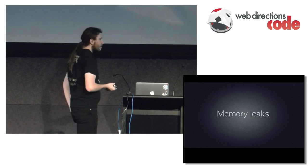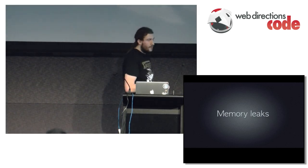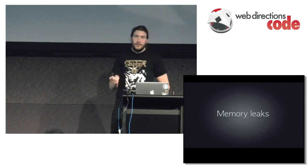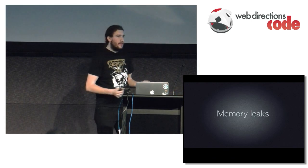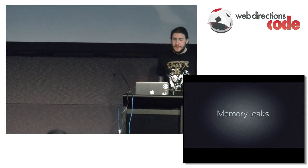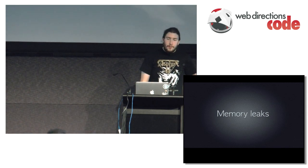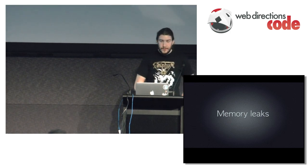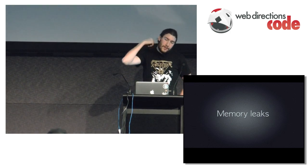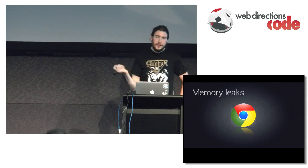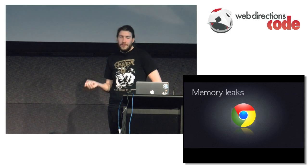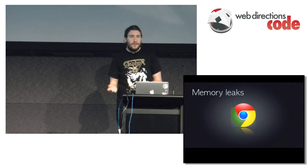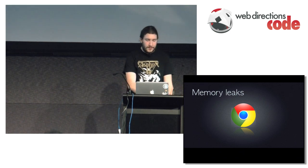Memory leaks. Unfortunately, garbage collectors are not perfect — we still leak memory. As demonstrated by IE: when you allocate DOM objects and assign an event listener, you get that circular reference, it never gets cleared up, and memory leaks like a sieve. Modern engines do much better. It's kind of hard to introduce a memory leak, but it still does happen. I'm going to show you how we detect memory leaks, how you find what object is leaking, what still has a reference to that object, and how to fix it.